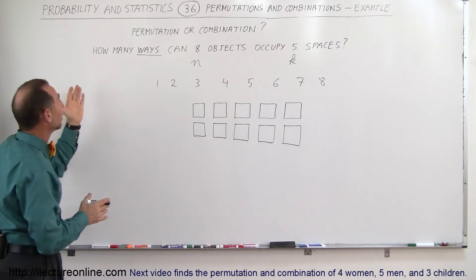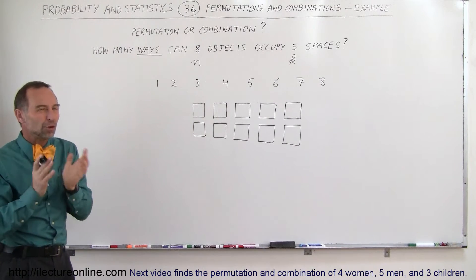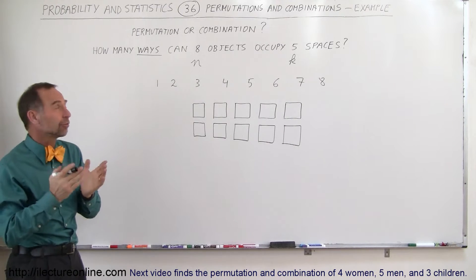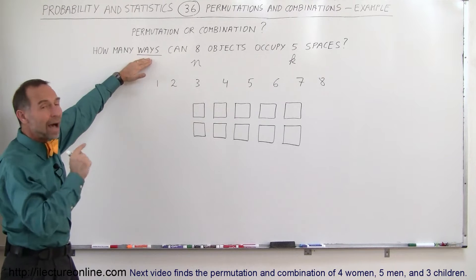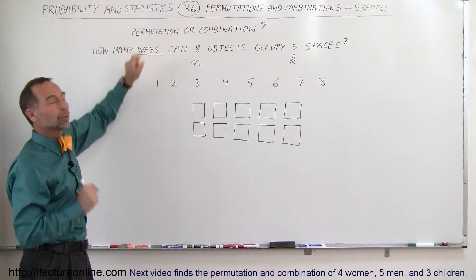Here's an example where we have: how many ways can 8 objects occupy 5 spaces? Now what are they asking for? Are they asking for permutations or are they asking for combinations? Sometimes a key word will help you. When they say how many ways, that means they usually look for permutations. We're looking for the number of permutations.